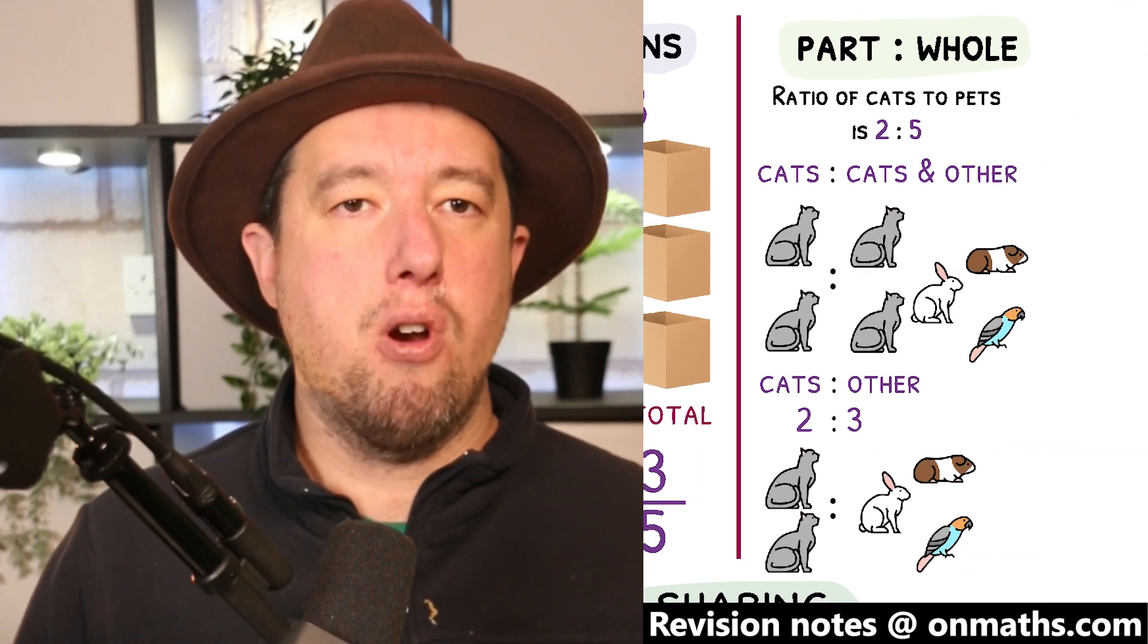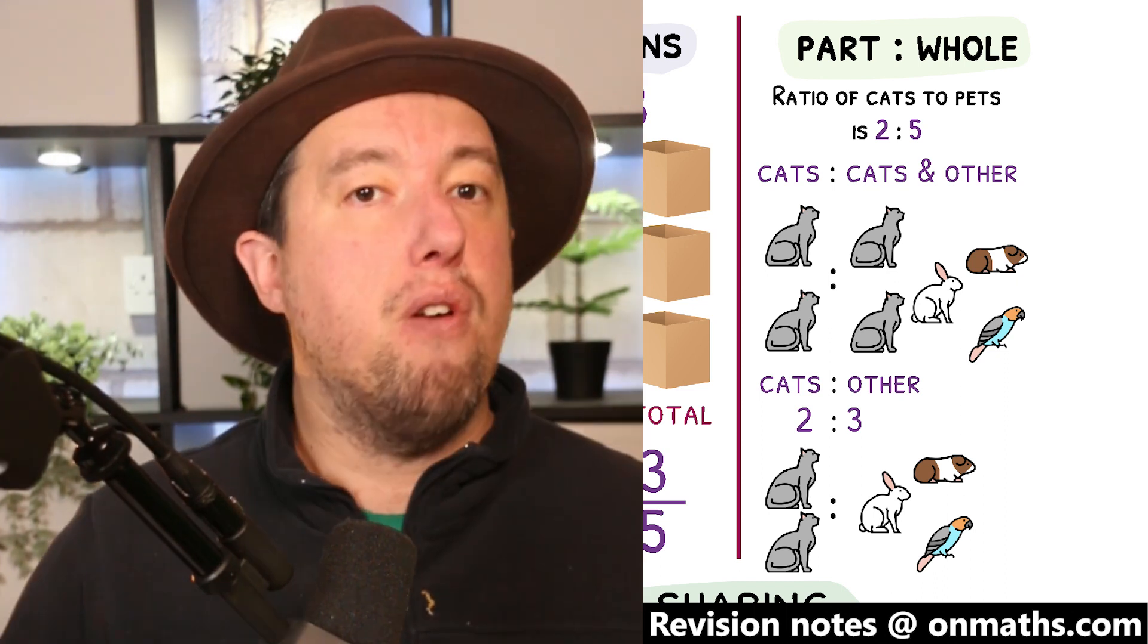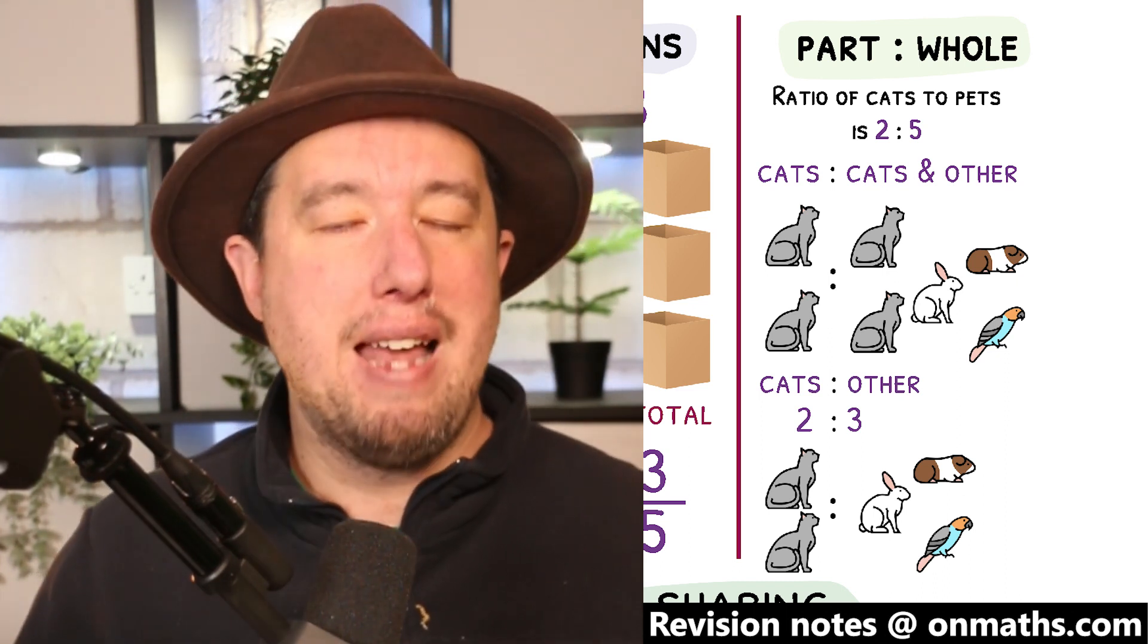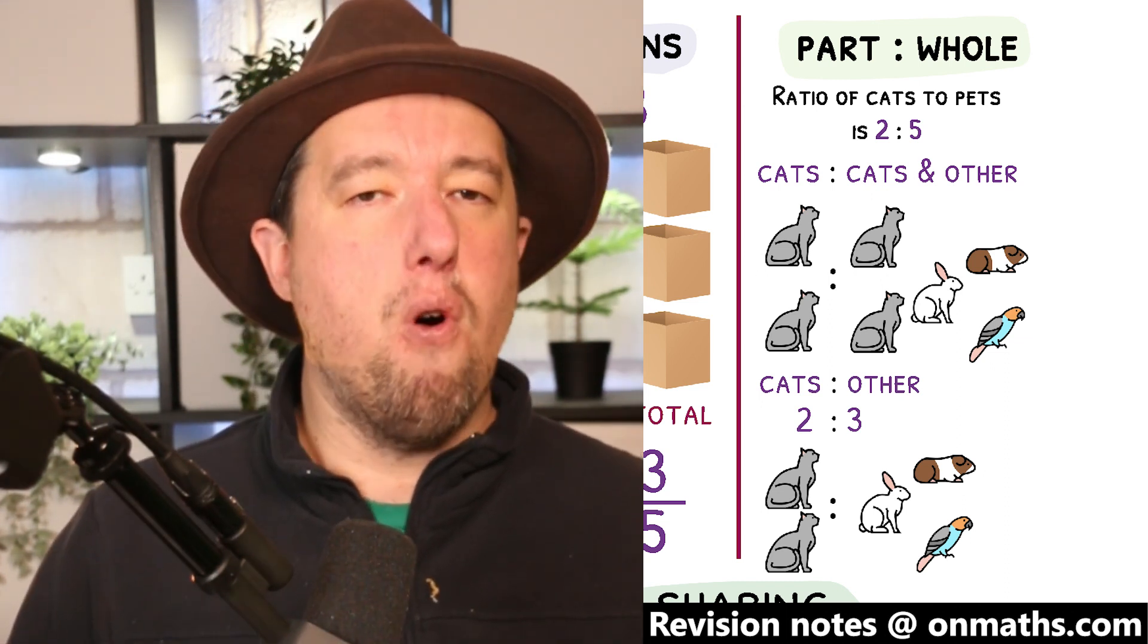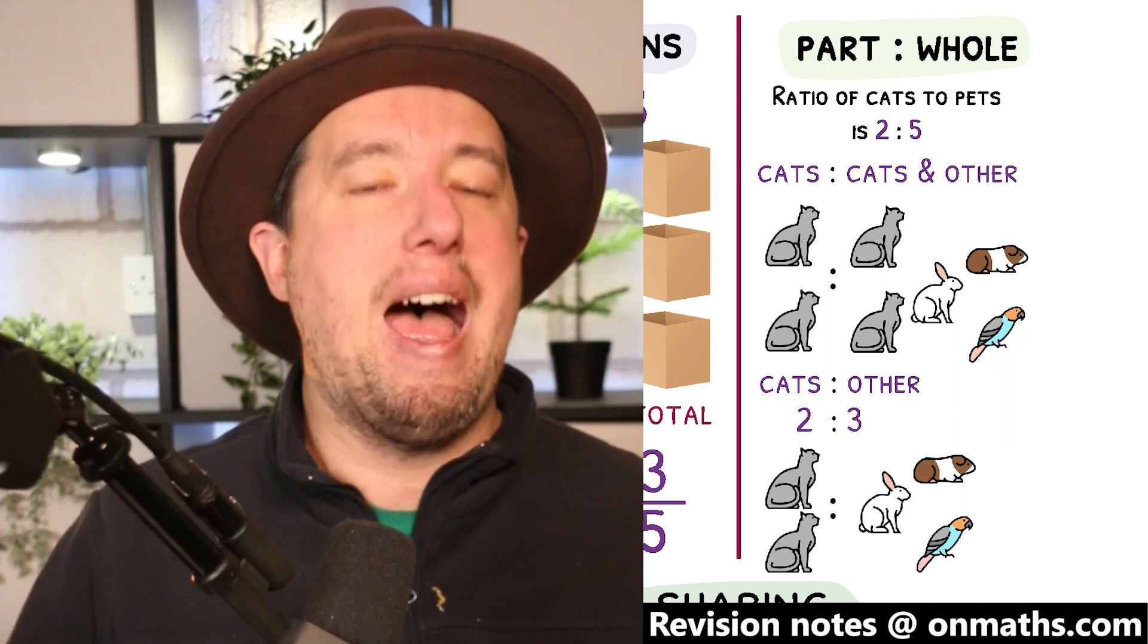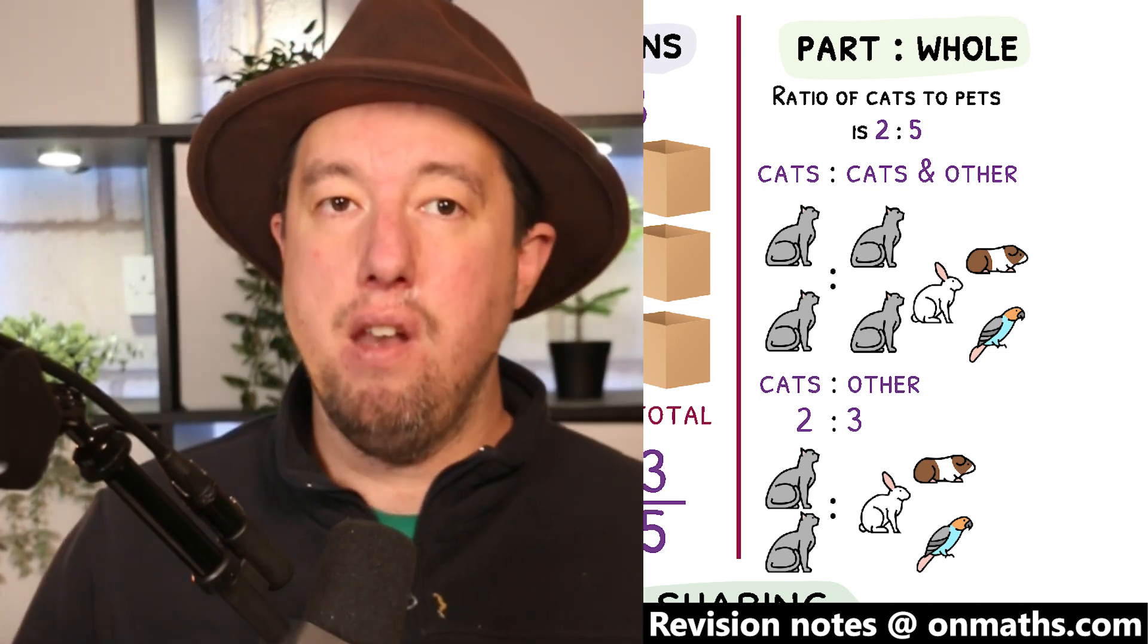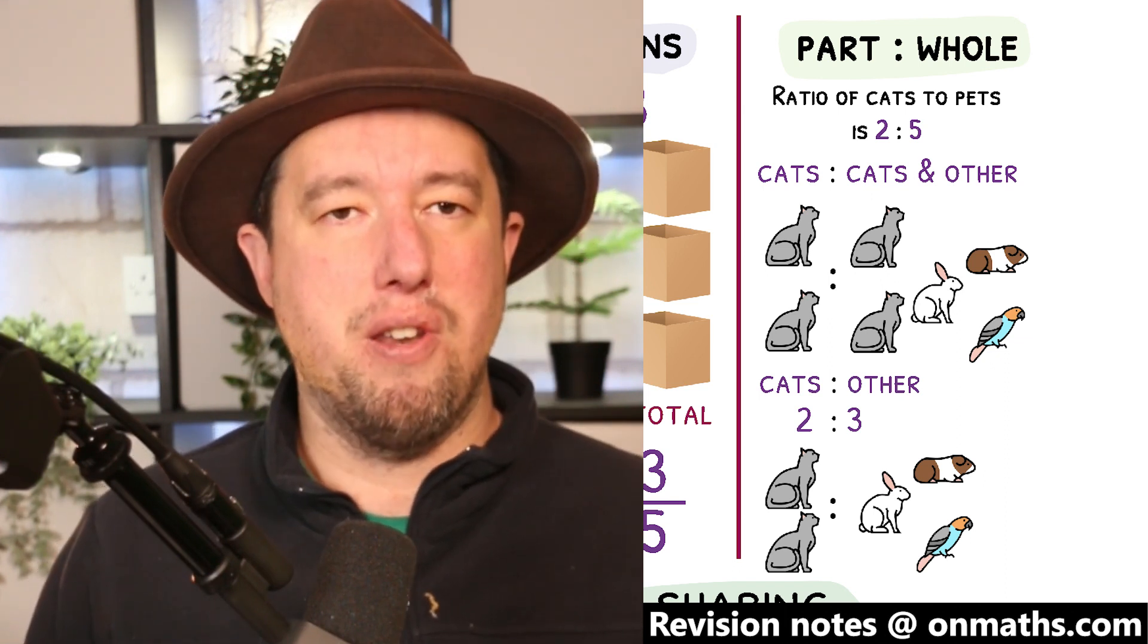Very rarely you may come across a ratio written where the left-hand represents an item, but the right-hand represents the whole. For example, the ratio of cats to pets is 2 to 5. Cats are a pet, therefore are included in the left and the right-hand side. If we wanted to make this a fraction of cats to non-cats, we can remove the cats from the right-hand side to make it a ratio of 2 to 3.